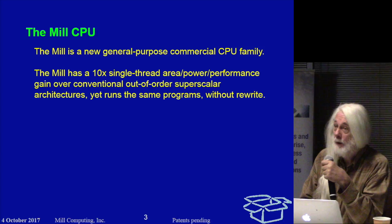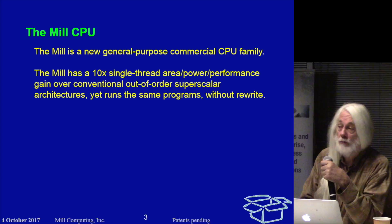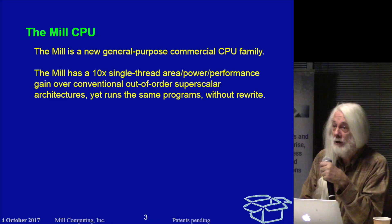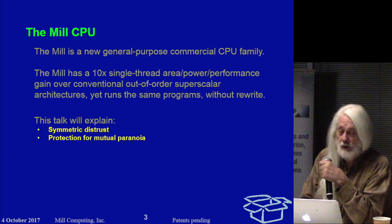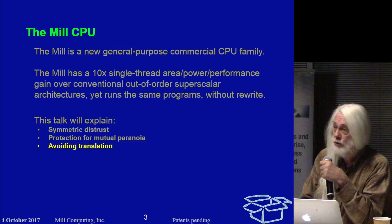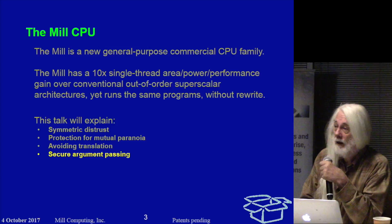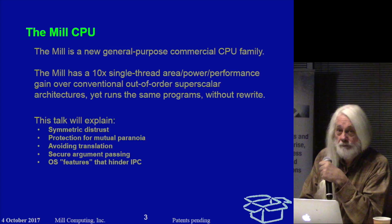We believe we have this in the Mill. There's a 10X advantage over existing architectures in the area across product, across performance. And one of the things that we'll be touching on tonight is where that 10X comes from in the particular case of interprocess communication. We'll cover, in particular, symmetric distrust and asymmetric distrust and how protection works when both sides are paranoid. Part of the advantage that Mill has is that we do not have to do translation when data is being passed back and forth across interprocess communication, and still the data can be passed in a way that is secure from both sides.